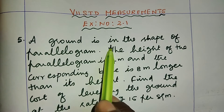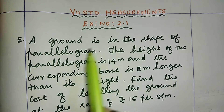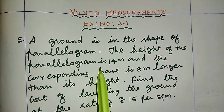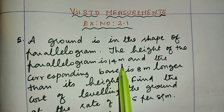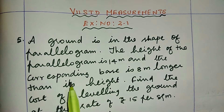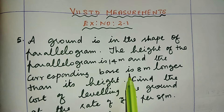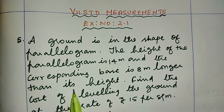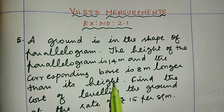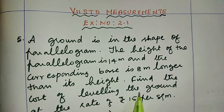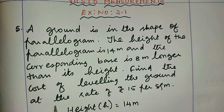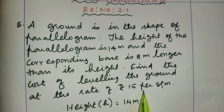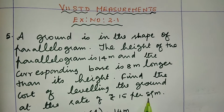A ground is in the shape of a parallelogram. The height of the parallelogram is 14 meters and the corresponding base is 8 meters longer than its height. Find the cost of leveling the ground at the rate of rupees 15 per square meter.